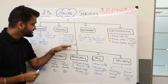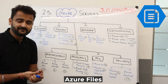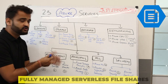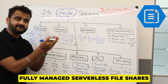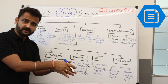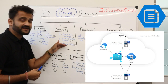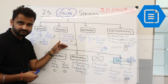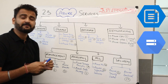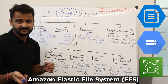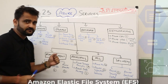The eighth service is Azure Files — a file share service you can use across different VMs. If you have a file share on a Windows server, you can replicate it using Azure Files. The equivalent on Google is Cloud Filestore, and on AWS it is Amazon EFS — Elastic File Store.